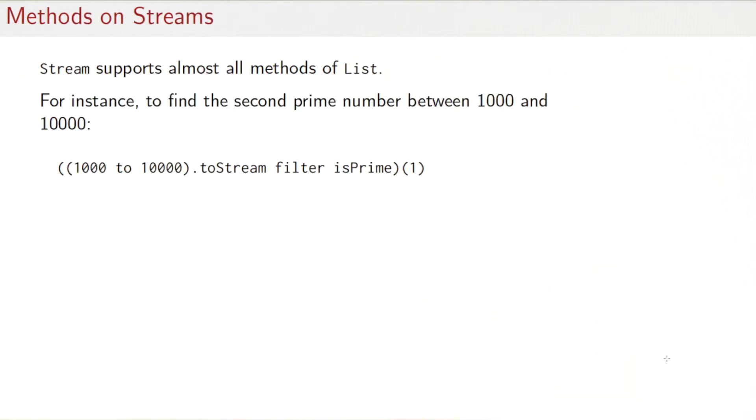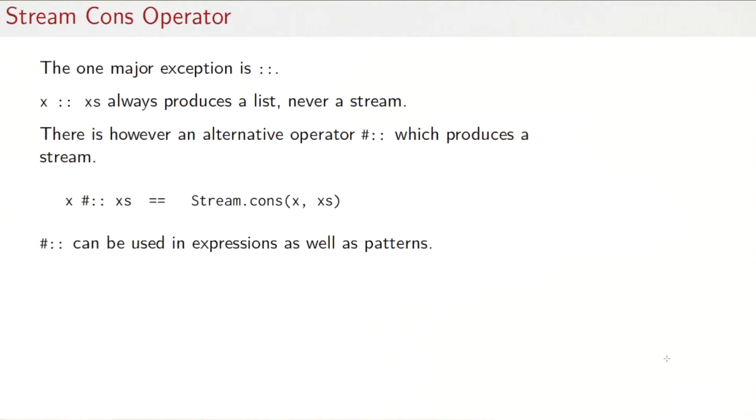In most respects, streams are actually like lists. In particular, streams support almost all the methods of a list. So for instance, to find the second prime number between 1000 and 10,000, the problem we started with, we could simply write it this way. So instead of writing the range directly, we convert the range to a stream. Then we apply the filter method on a stream and we apply the apply method on a stream with the one as the argument. There's only one exception where streams don't follow lists and that's the cons operator. So if you write X double colon XS that always produces a list, never a stream. But there is an alternative operator which is written hash double colon which produces a stream. So X hash double colon XS is actually the same as stream.cons of X and XS. And that operator can be used in expressions as you see here, but also in patterns.